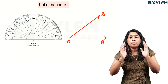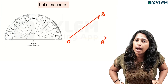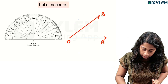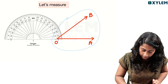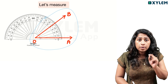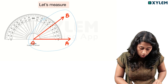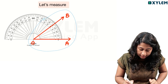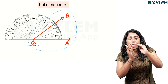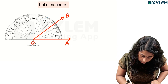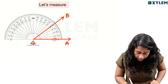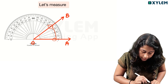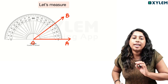Here we have angle OAB. This angle OAB is measured as follows: the vertex is the origin. One arm is the baseline. Place the origin on the line. The automatic alignment means that arm along zero — and I'm reading the angle from the arrow here.